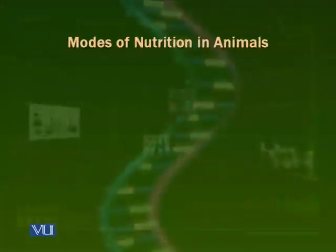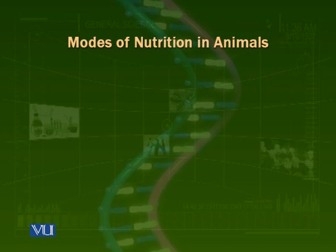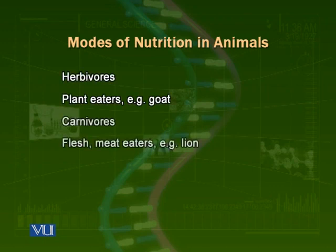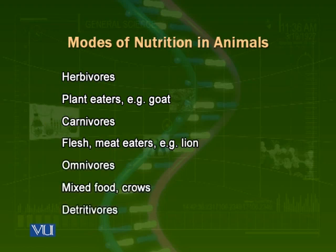According to their mode of nutrition, animals may be herbivores, carnivores, omnivores, or detritivores. We call them decomposers if they decompose or break up dead organic matter. Many microorganisms like bacteria are also decomposers — they break down dead organic matter present in soil, water, or other places. There are four major categories of animals according to their modes of nutrition: herbivores, carnivores, omnivores, and detritivores.